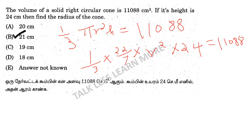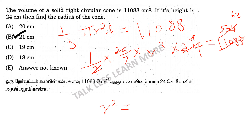If we cancel and simplify: 22 by 7 and 11,088 cancel to 504. Continuing to simplify and cancel terms step by step, we reduce the equation further to find r².